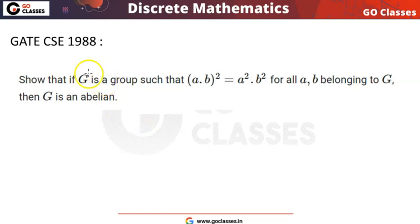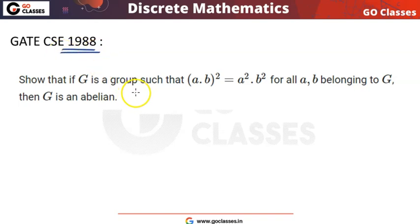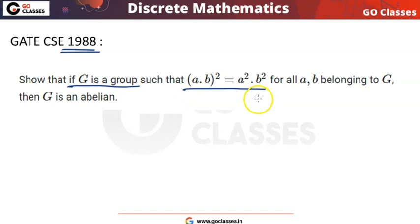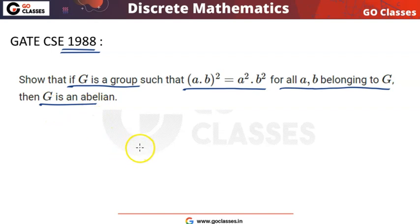Hi everyone, welcome to Go Classes. Let's solve this question. This is a GATE 1988 question from group theory. The question says: show that if G is a group such that (ab)² = a²b² for all a, b belonging to G, then G is abelian.